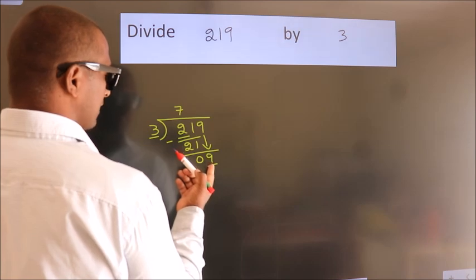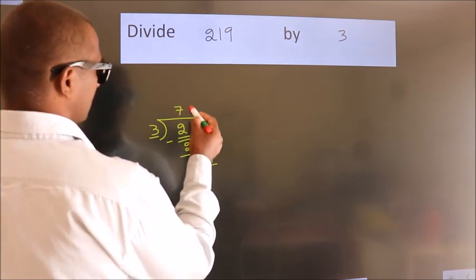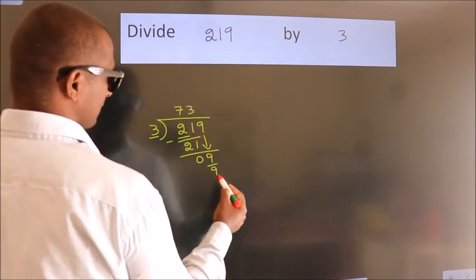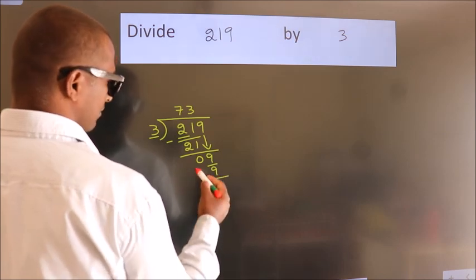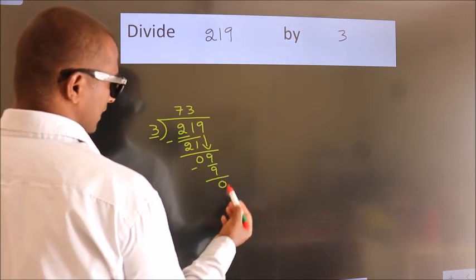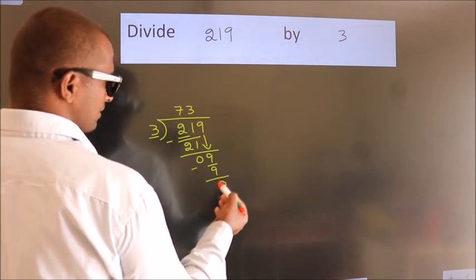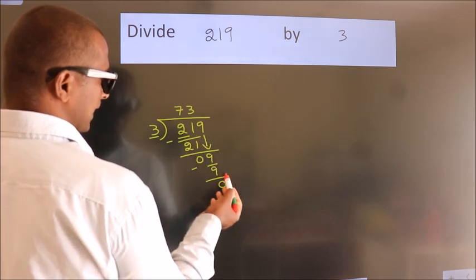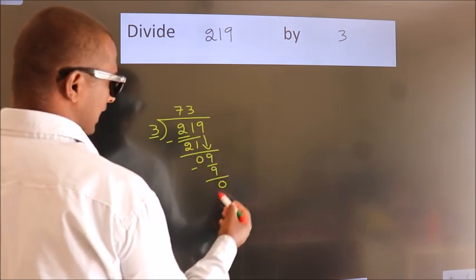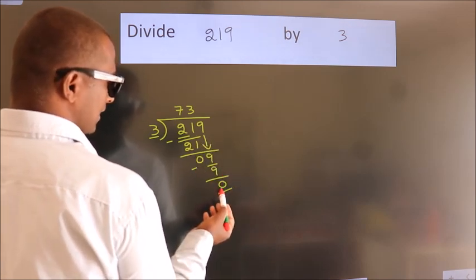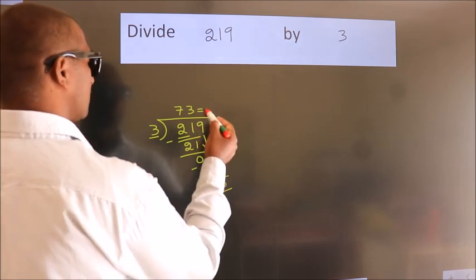When do we get 9? In the 3 table, 3 threes is 9. Now, we subtract. We get 0. After this, no more numbers to bring down. We got remainder 0, so this is our quotient.